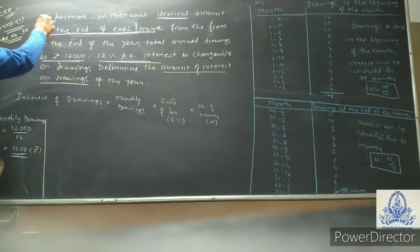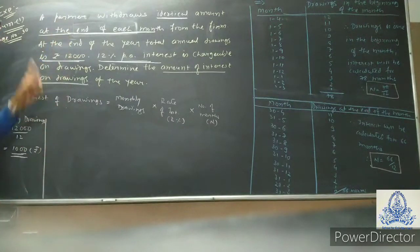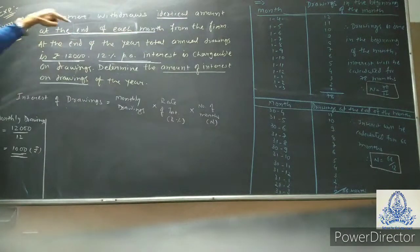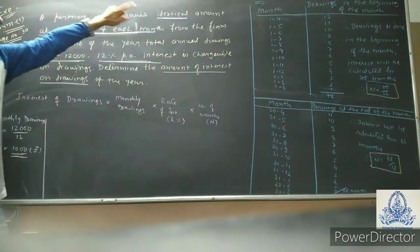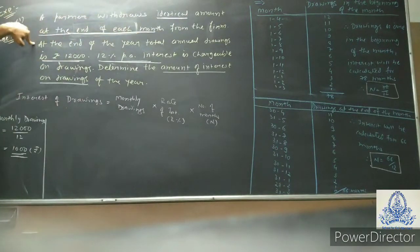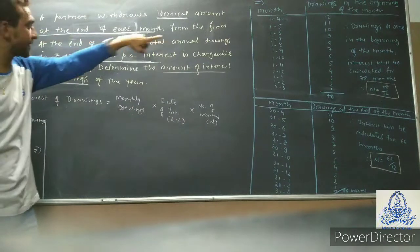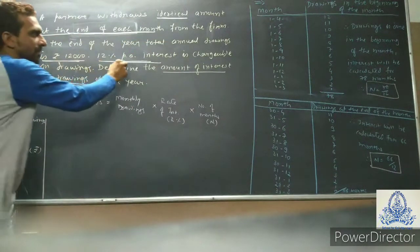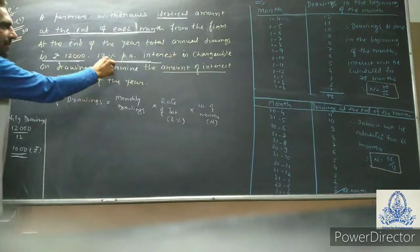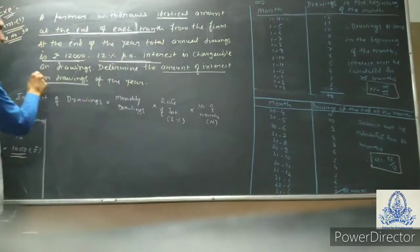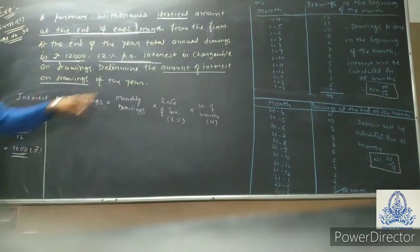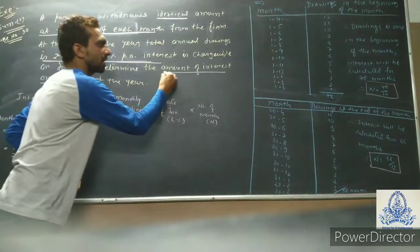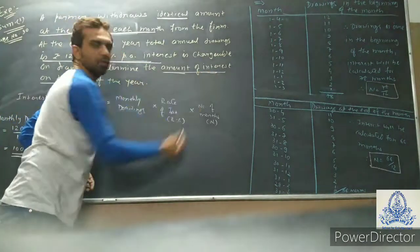Now the first sum: a partner withdraws an identical amount at the end of each month from the firm. At the end of the year, the total annual drawings is 12,000. A 12% per annum interest is chargeable on drawings. Determine the amount of interest on the drawings for the year.